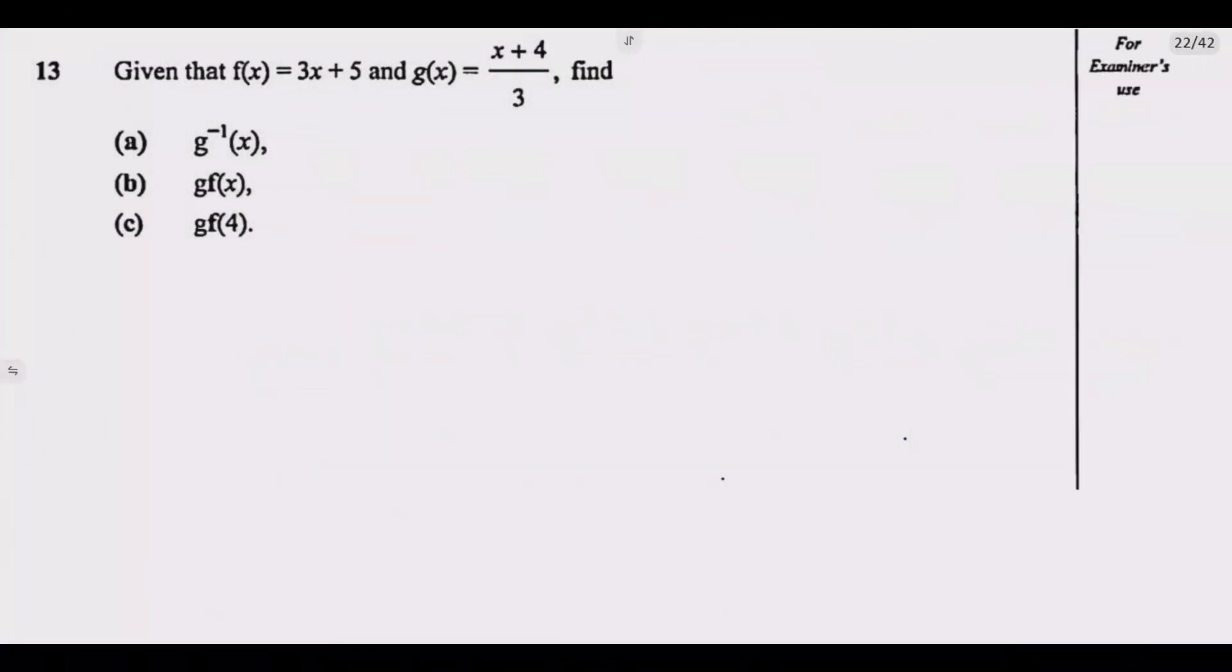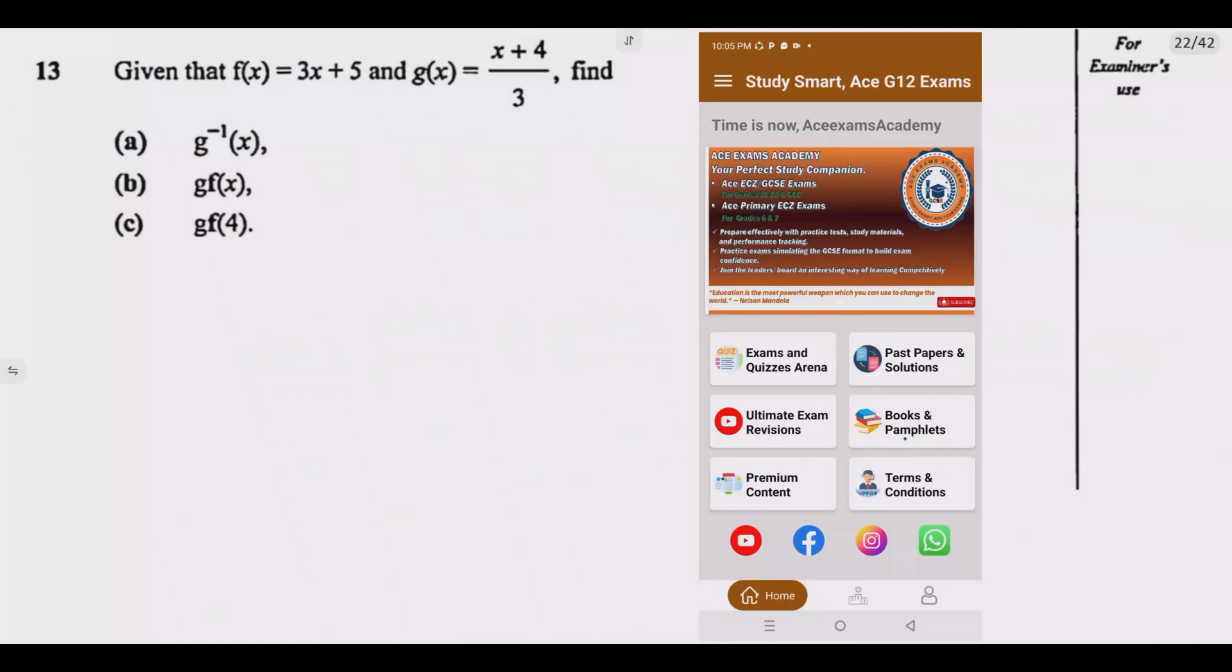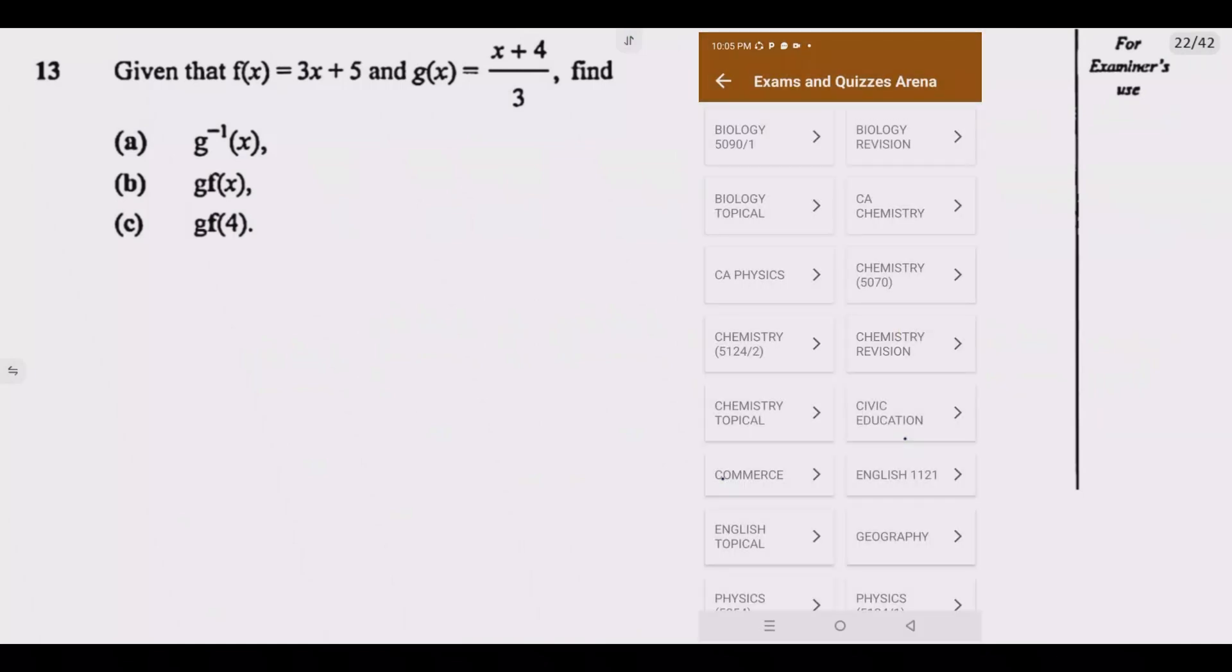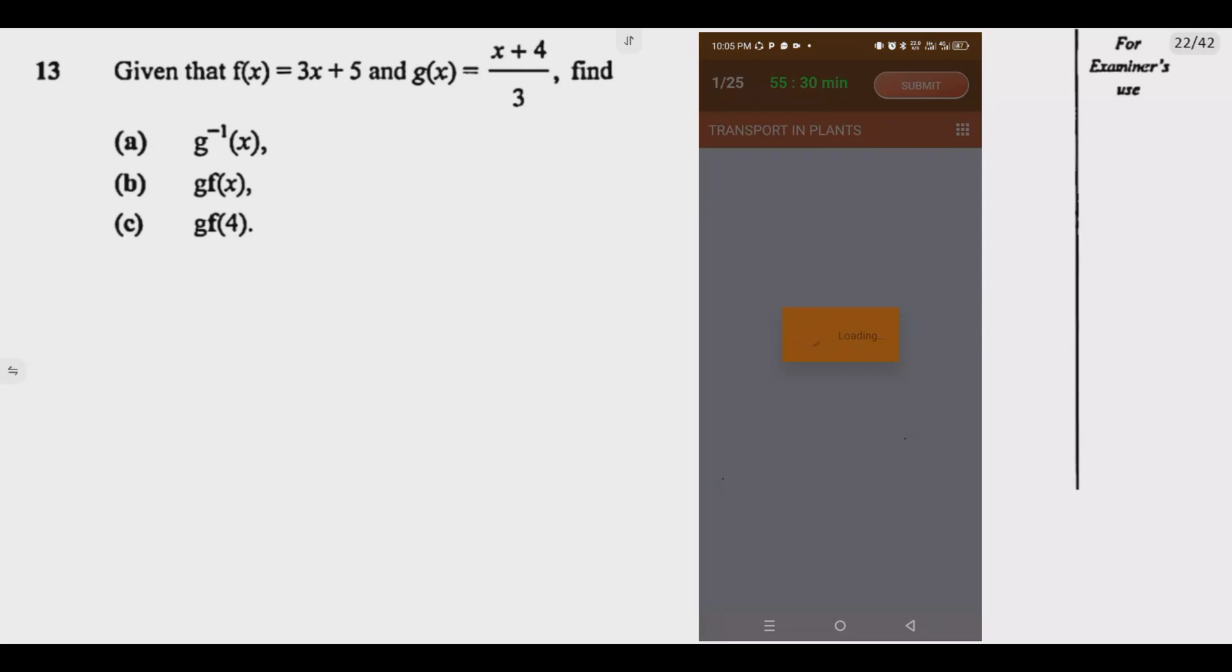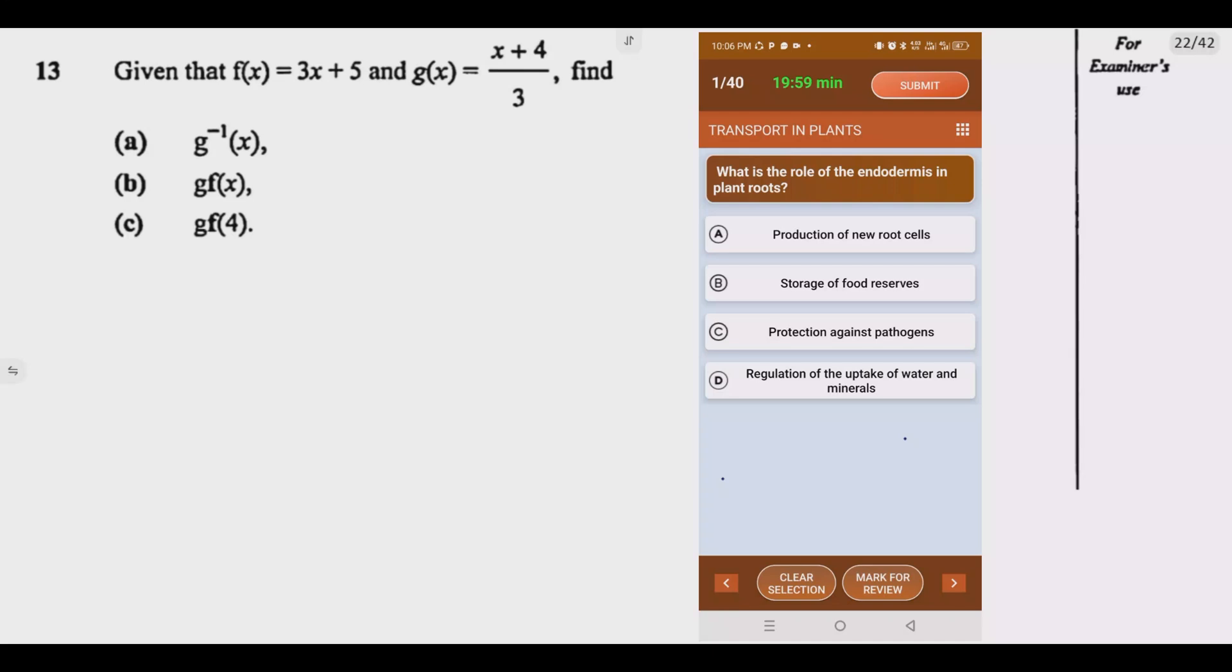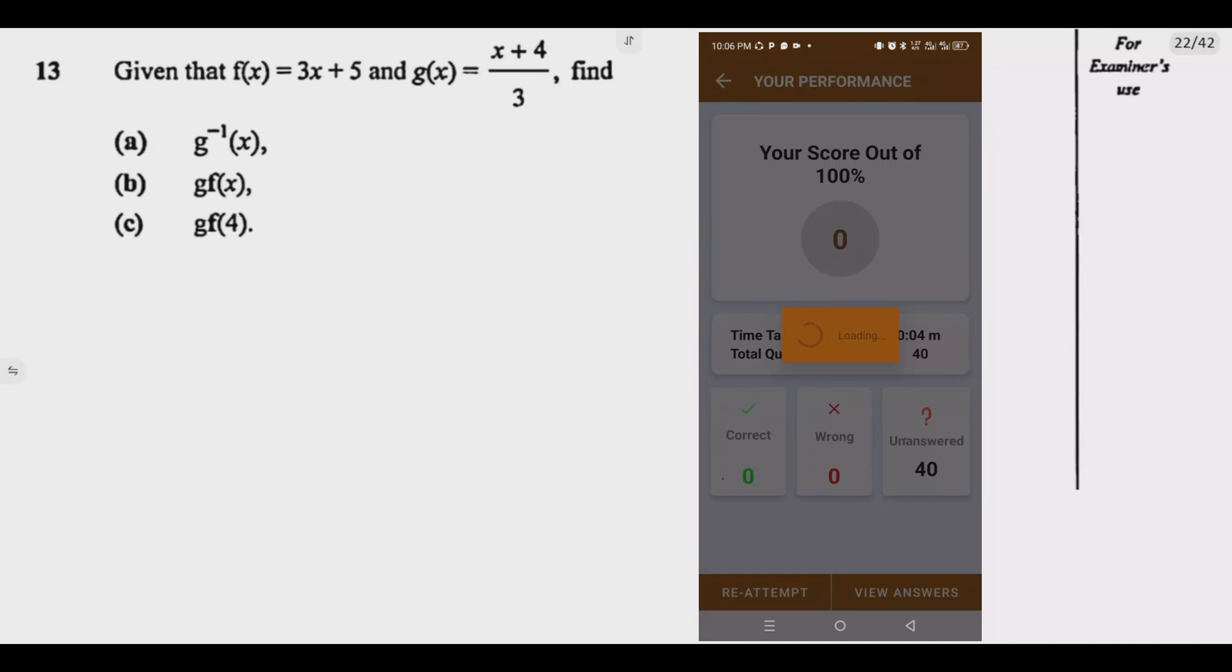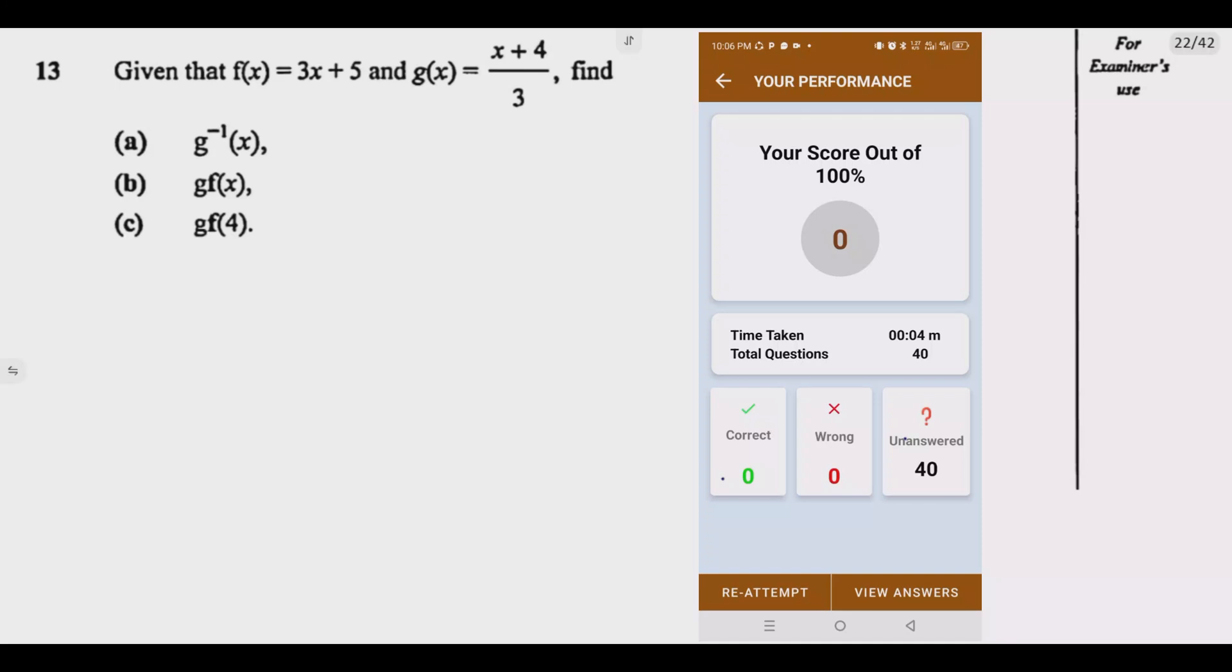Question 13. Given that f(x) equals 3x plus 5 and g(x) equals (x plus 4) divided by 3, find g inverse of x, composite function g(f(x)), then g(f(4)).